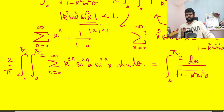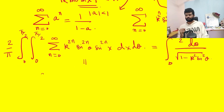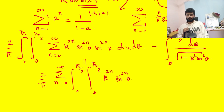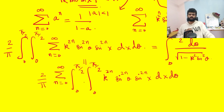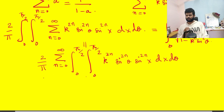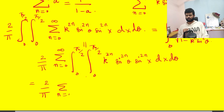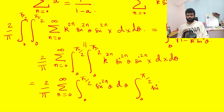We pull the summation outside the integral. This is justified by the Lebesgue Dominated Convergence Theorem from measure theory, which allows interchange of sum and integral here. The result splits as: Σ_{n=0}^∞ k^{2n} times [∫₀^{π/2} sin^{2n}θ dθ] times [∫₀^{π/2} sin^{2n}x dx].